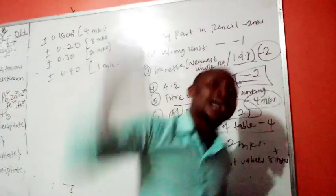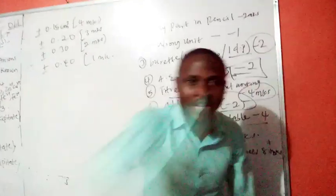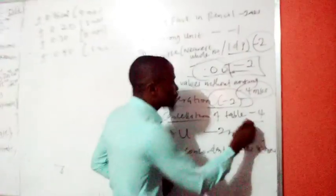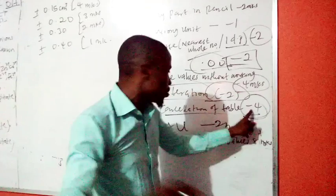Cancellation of table. If you go and cancel table like this, use burette because you were told not to use pencil, and you cancel table, it brings about subtraction of four marks.